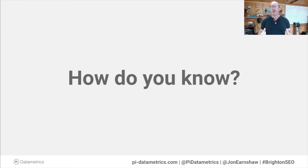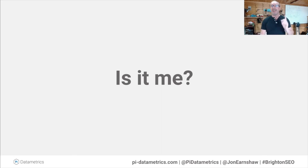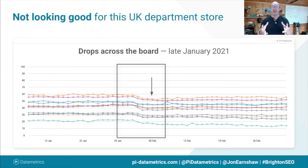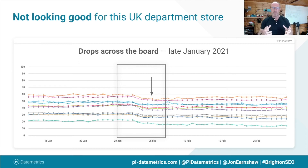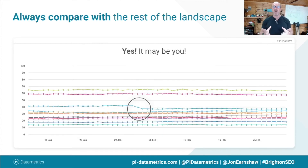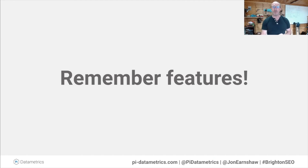A question we often get is: how do you know if you've been impacted by an algo? First thing you need to ask is: is it me? Sometimes it is. Here's a big UK online department store — no prizes for guessing who it is. In late January they saw a drop for multiple categories of search term. The first question you might ask is: is it just me or is it an algorithm update? Well, compare yourself with competitors. Yes, it is you — always compare with the rest of the landscape. That wasn't an algo update.